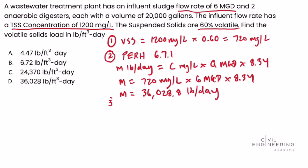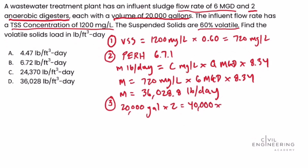In step three, we find the total volume. The problem gives 20,000 gallons per digester, but there are two anaerobic digesters, so we multiply 20,000 gallons by two to get 40,000 gallons total. Then we convert to cubic feet using the conversion factor from section 1.2 of the PE Reference Handbook: 0.134 cubic feet equals one gallon. This gives us a volume of 5,360 cubic feet.